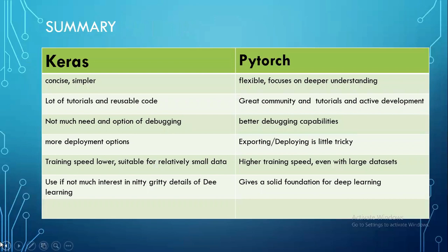Here is a summary of what we discussed. Keras is concise and simpler — write less, do more. PyTorch is flexible and gives you a deeper understanding of your models. In Keras you will find many tutorials and reusable code on the internet. In PyTorch the community support is very large because many people are now inclined towards it, and active development is ongoing, meaning features are getting upgraded. In Keras there is not much option for debugging — you cannot debug your code beyond a limit because you do not have control over it. In PyTorch you have better debugging capabilities.